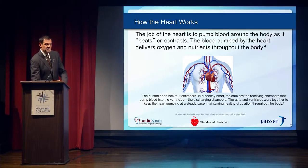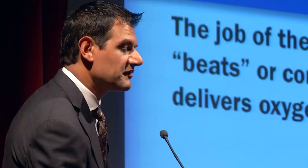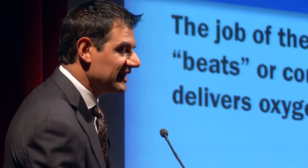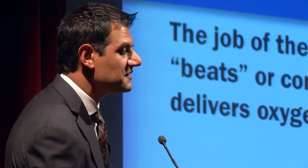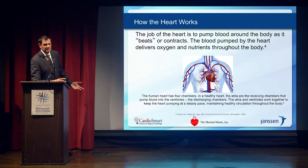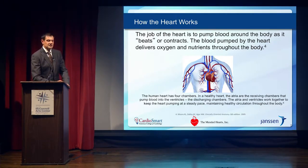The upper chambers, or atria, gather blood to prime the pump so it can be pumped forward. Another job of the upper chamber is to generate the heartbeat, which is basically an electrical signal. That signal travels through the heart in a specific sequence, causing the different chambers to pump in a special order to effectively move the blood forward.